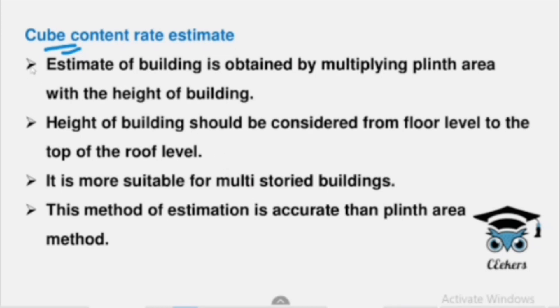In the Cubic Content Method, we multiply the area by the height of the building to get the volume. We consider height in the cubic content method but not in the plinth area method. Area multiplied by height gives a particular value. This method is more suitable for multi-storey buildings and is more accurate. The Cubic Content Method is the most accurate approximate estimate method, while the Plinth Area Method is the least accurate.